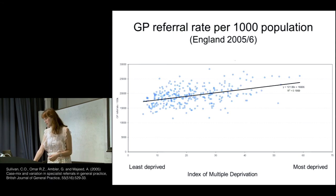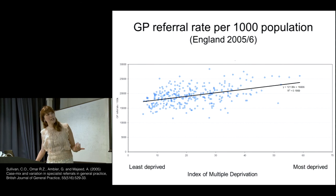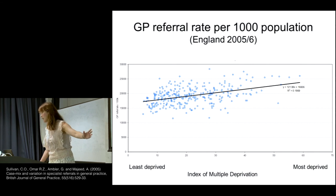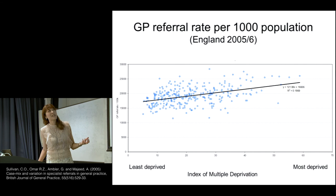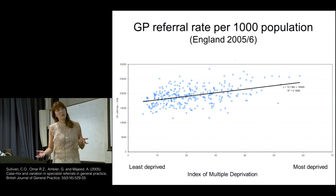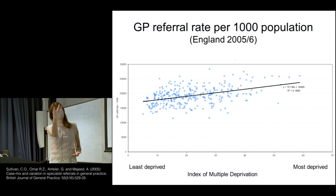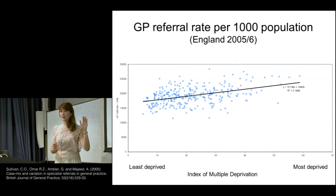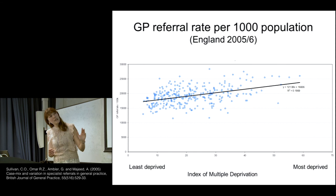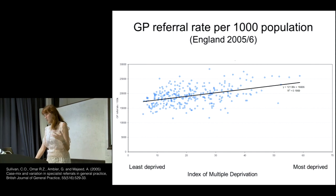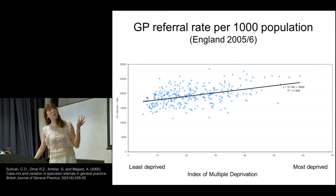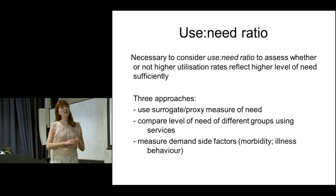Looking at GP referral rates per 1,000 people: the least deprived have fewer referrals, and the most deprived have more referrals — which also seems to reflect need. But we must ask: is this gradient steep enough? We know it's going in the right direction, but should it be even steeper — much lower for the least deprived and much higher for the most deprived? To determine whether use truly reflects need, we need to consider the use-to-need ratio.